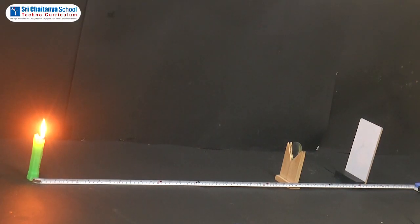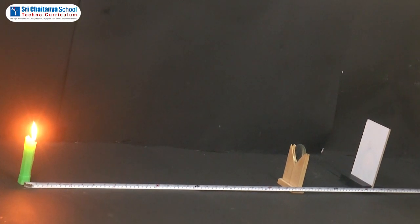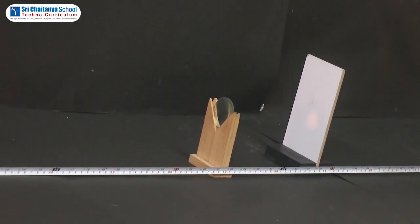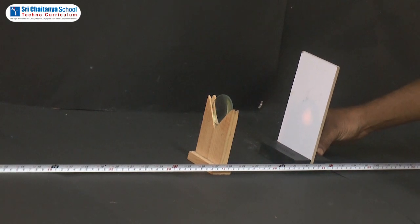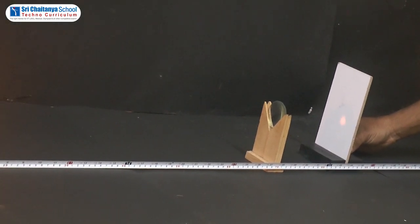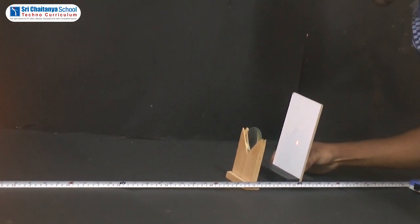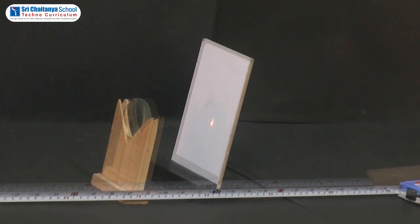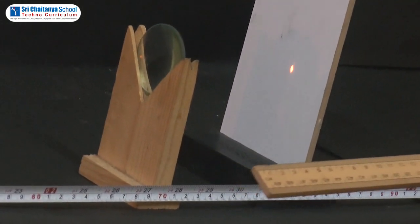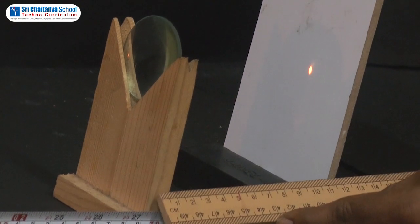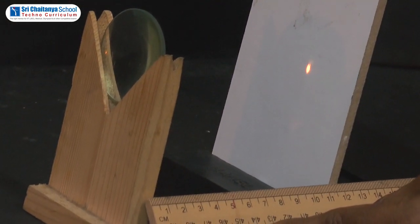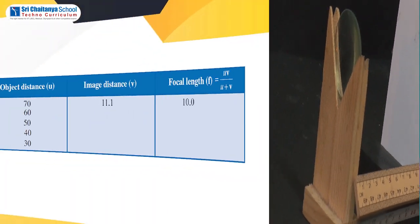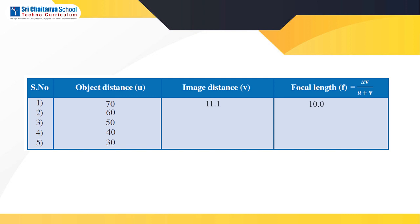Let us place the lens at 70 cm mark from the candle. Adjust the screen until you get a sharp image on the screen. You can see the image here on the screen — that is an inverted image. Now measure the distance between the convex lens and the screen. Here we got the image distance as 11.1 cm. Now let us tabulate the values in the given tabular form.